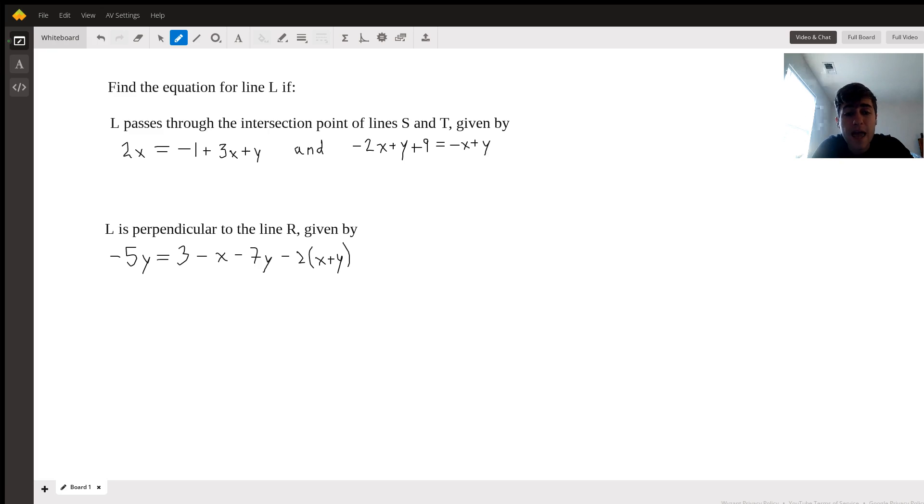The first one states that the line L passes through the intersection point of the lines S and T. The line S is described by the equation 2x equals negative 1 plus 3x plus y, and the line T is described by the equation negative 2x plus y plus 9 equals negative x plus y. Secondly, we know that L is perpendicular to a line R, which is given by the equation negative 5y equals 3 minus x minus 7y minus 2 times the quantity x plus y.